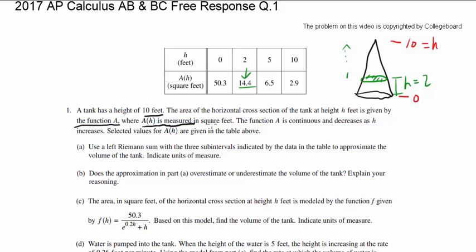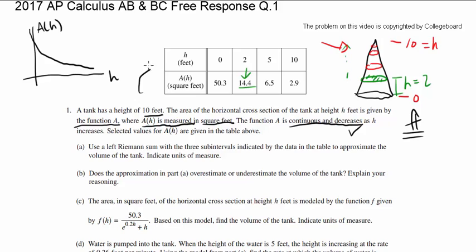A of h is measured in square feet, and the unit is very important for you to get the full amount of credit that you can. So make sure you know what the unit is. The function A is continuous and decreases as h is increasing. So if we look at A, the area is decreasing. As you're going up, the area of a cross section is getting smaller and smaller. Selected values of A of h are given in the table above.